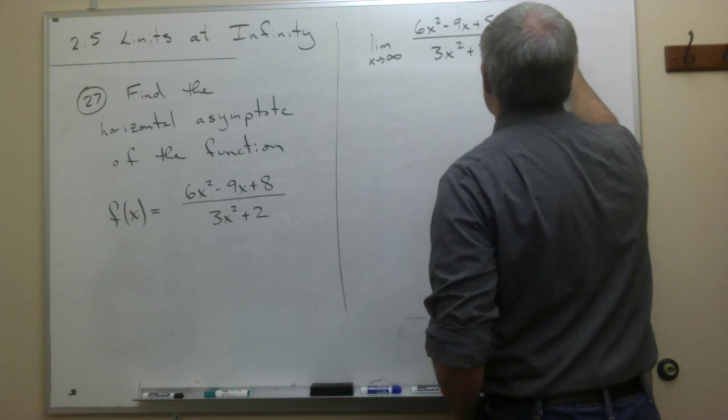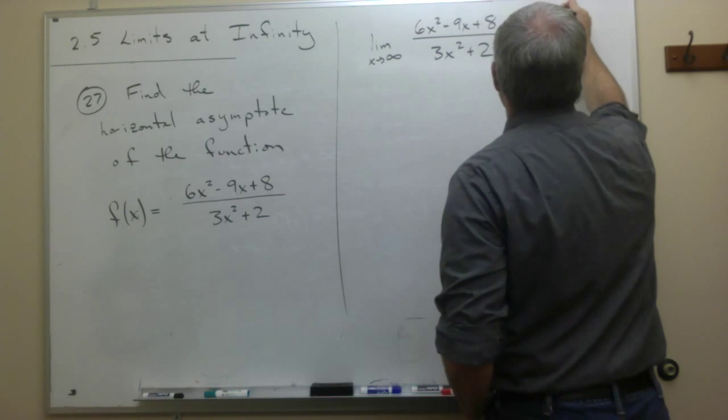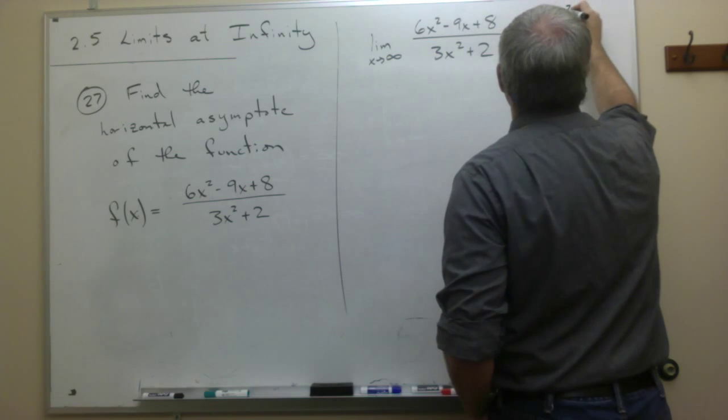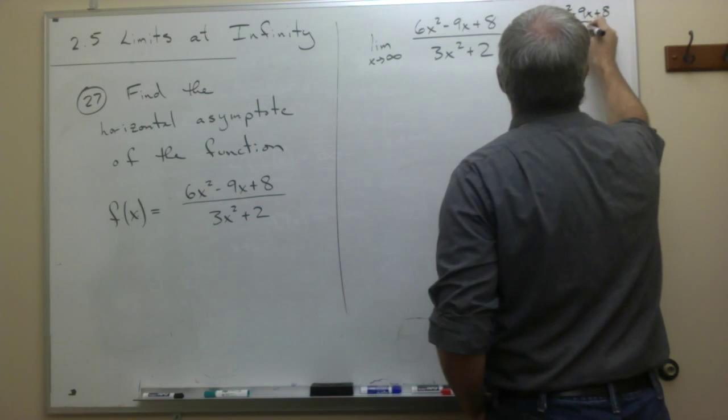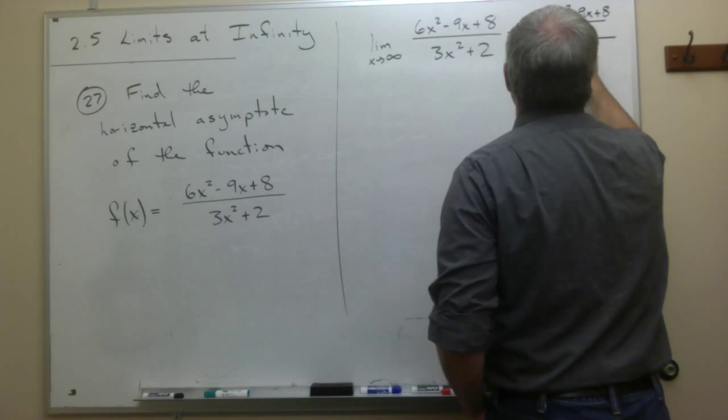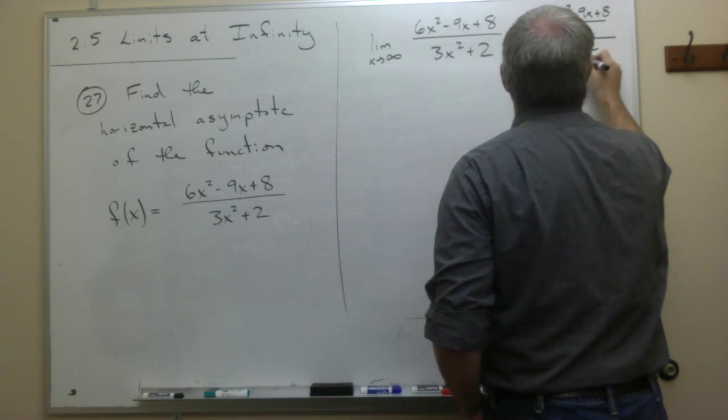So I get the limit as x goes to infinity of, on top I get 6x squared minus 9x plus 8 divided by x squared, divided by 3x squared plus 2 over x squared.